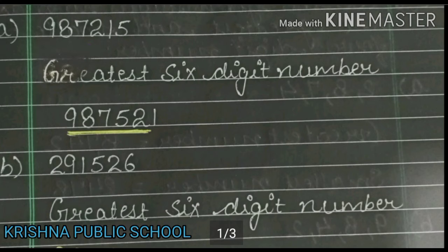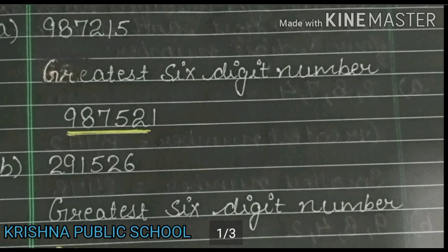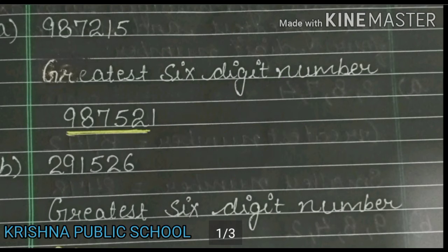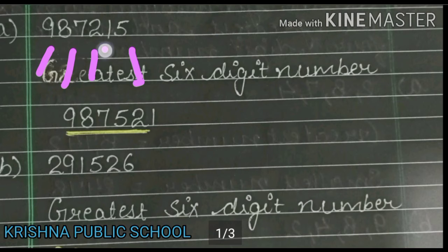Now, we see the number of digits: 9, 8, 7, 2, 1, 5. To get the greatest number, we arrange in descending order, meaning greatest to smallest. So the greatest number is 9, then smallest is 8, then 7, then 5, then 2, and lastly the smallest is 1.